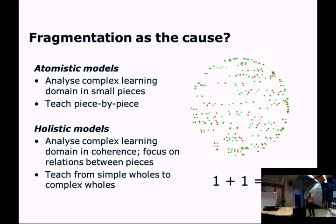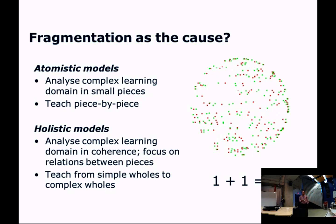When we are teaching complex domains — problem solving, reasoning, decision making — we have the tendency to simplify this complex domain by putting it into smaller and smaller pieces and then teach it piece by piece. I call this an atomistic model, and this yields education that is fragmented.